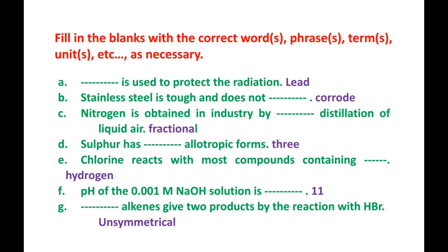Number F. The pH of a 0.001 molarity NaOH solution is blank. NaOH solution is 0.001 molarity. The pH of the 0.001 molarity NaOH solution is 11.